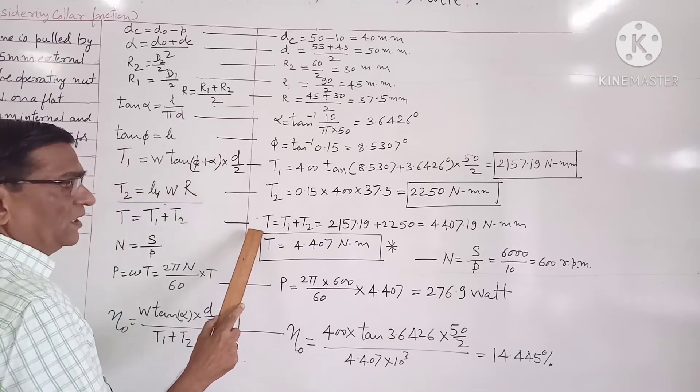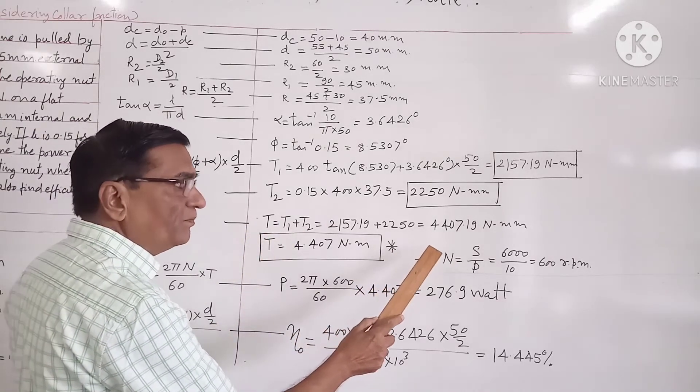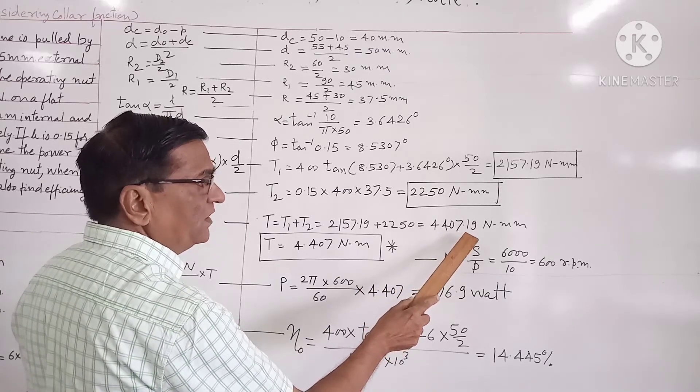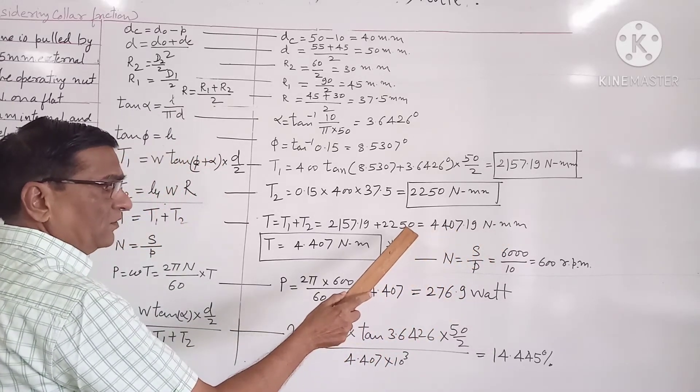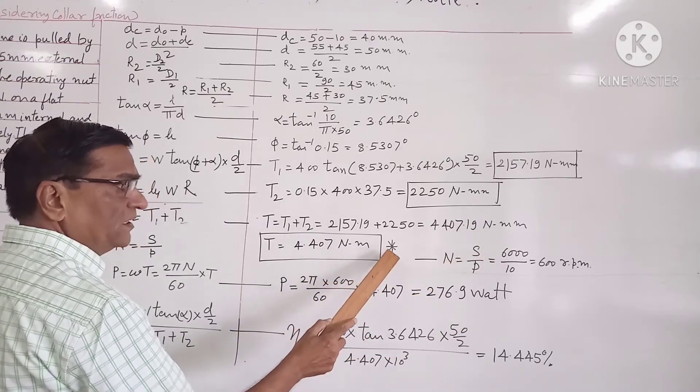Now total torque required to raise the load T is equal to T1 plus T2, that comes out to be 4407.19 newton millimeter. In order to have the power in watts we have to convert the newton millimeter into newton meter. This is an important step.